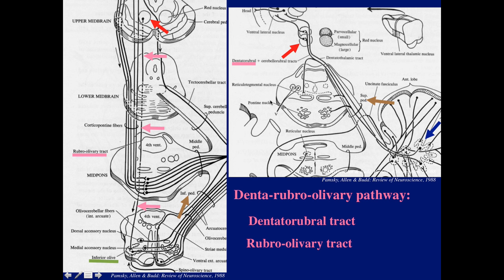As these detailed diagrams show, the dentato-rubro-olivary pathway is composed of two tracts: the dentato-rubro-olivary tract and the rubro-olivary tract. The dentate communicates with the opposite-sided red nucleus through the superior cerebellar peduncle via the dentato-rubro-olivary tract. Then we have another tract, the rubro-olivary tract, that communicates the red nucleus with the inferior olive on the same side.